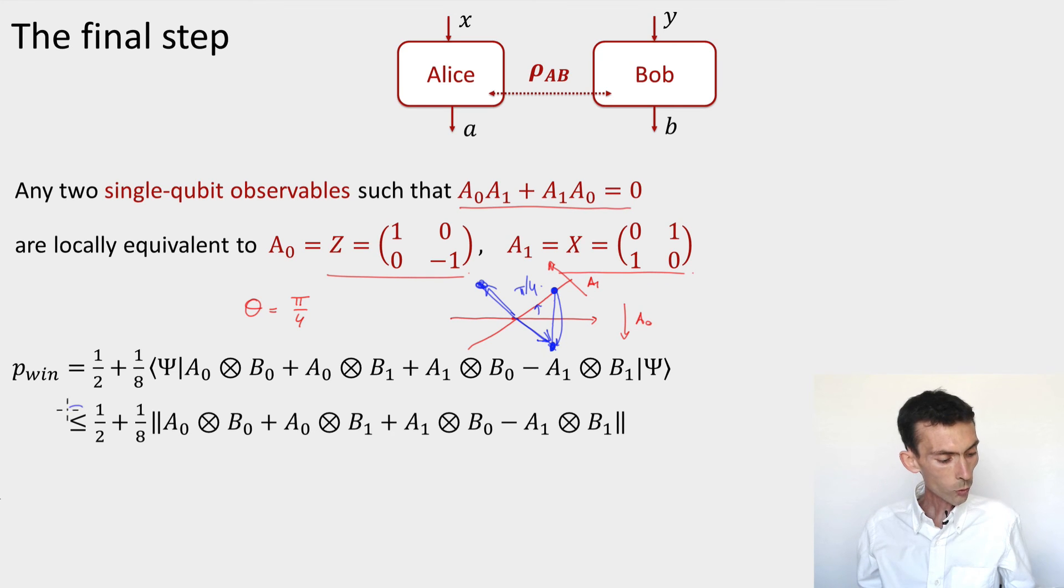And then the last thing that you want to observe is that because once we've set A0 and A1 to these values, in order to have equality in this inequality that we saw a couple slides ago, the only possible choice for B0, B1, and psi is going to be things that up to a rotation on B system are equivalent to the optimal strategy. So to get equality there, you need psi to be up to a rotation on Bob's system, an EPR pair phi^+, and you need B0 to be the Hadamard matrix, and you need B1 to be this tilde Hadamard matrix that I introduced earlier. This is the optimal strategy.